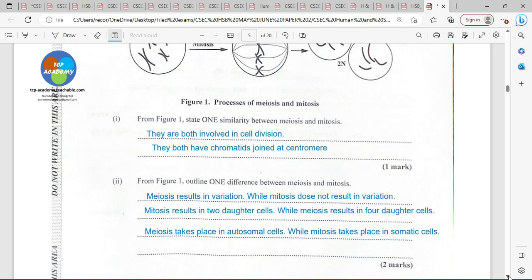From figure one, outline one difference between meiosis and mitosis. Meiosis results in variation, while mitosis does not result in variation. Mitosis results in two daughter cells, while meiosis results in four daughter cells.